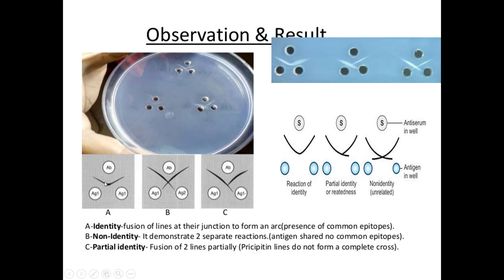Next is the reaction of non-identity. Unrelated antigens are placed in adjacent wells and the center well is filled with antibodies for each antigen. The precipitate bands will form but are independent of each other and hence cross.